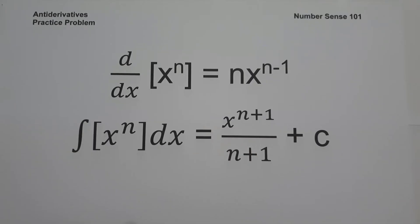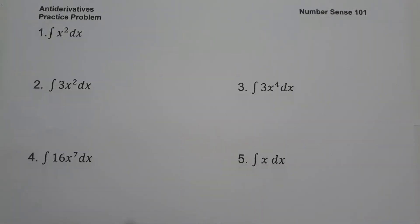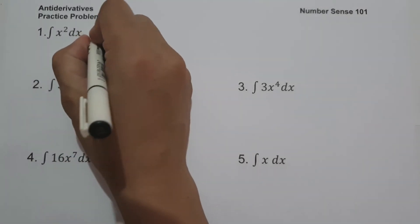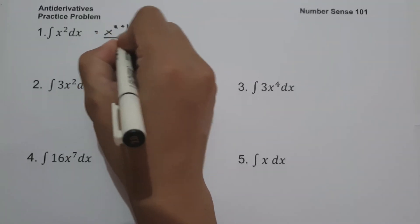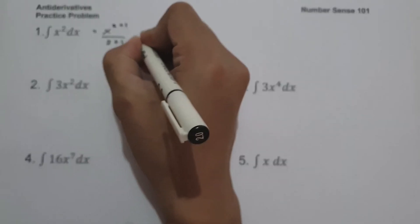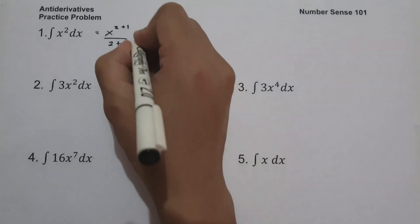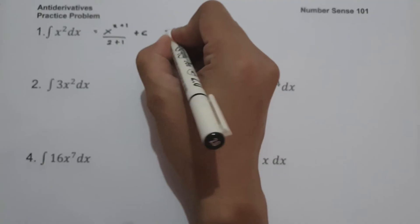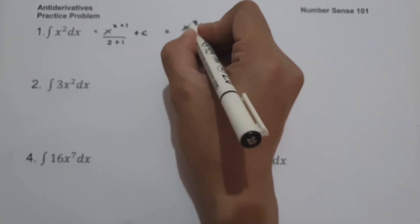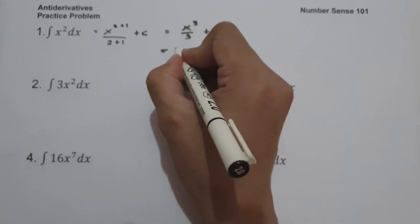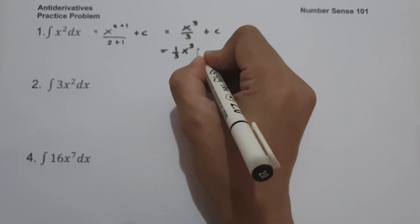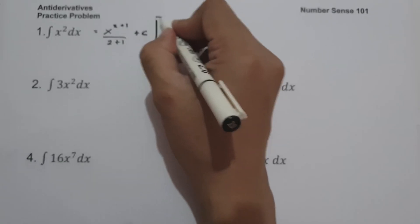Let's start with an example. On the first example, what is the antiderivative of x squared dx? To simplify, let us have x squared and then add 1, divide by 2 plus 1, and whenever we integrate a certain function, we need to add constant c. So this will be x cubed over 3 plus c, or you can write your answer as 1 third x cubed plus c.